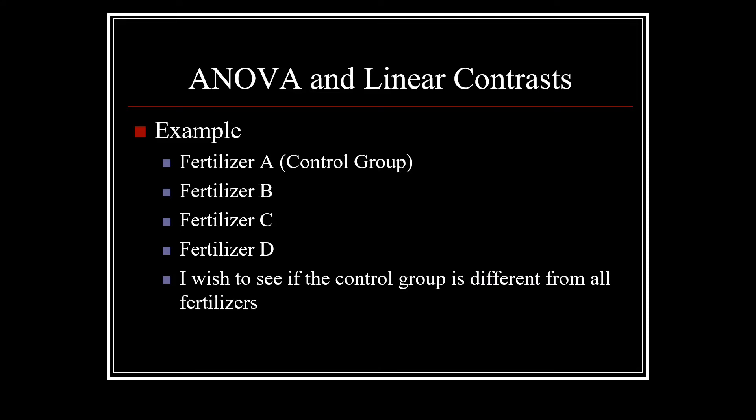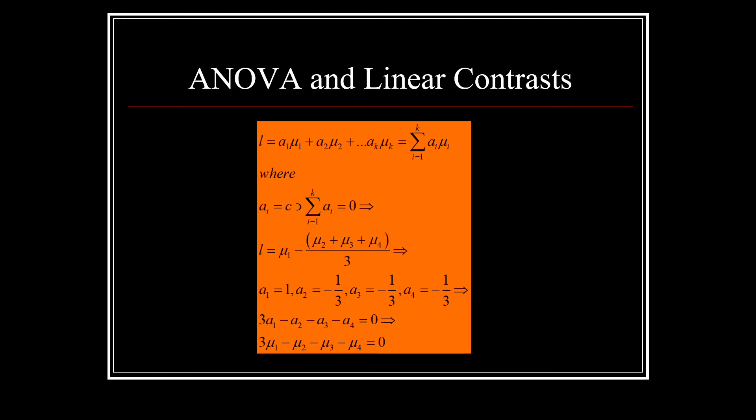Recall we were dealing with our crop data and perhaps fertilizer a is our control group and we'd like to see if our control group is different from all other fertilizers. So our linear contrast, the sum of a_i times mu_i, is simply going to be a1 equals 1, a2 equals negative one third, a3 equals negative one third, a4 equals negative one third, and we can see that we get 3 mu1 minus mu2 minus mu3 minus mu4 equals zero.